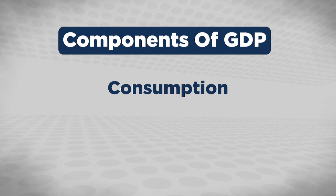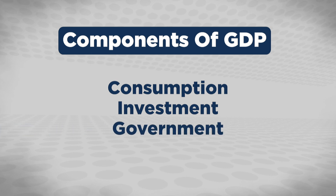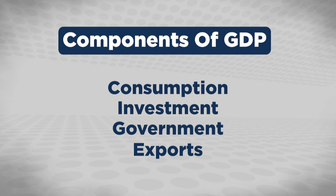The major components of GDP are: personal consumer expenditures — the consumer makes up a very big portion of it; gross private domestic investment; government expenditures, investment, and consumption — anything that deals with the government in that regard; and net exports, which is just the difference between imports and exports. Those are the four main components of GDP.